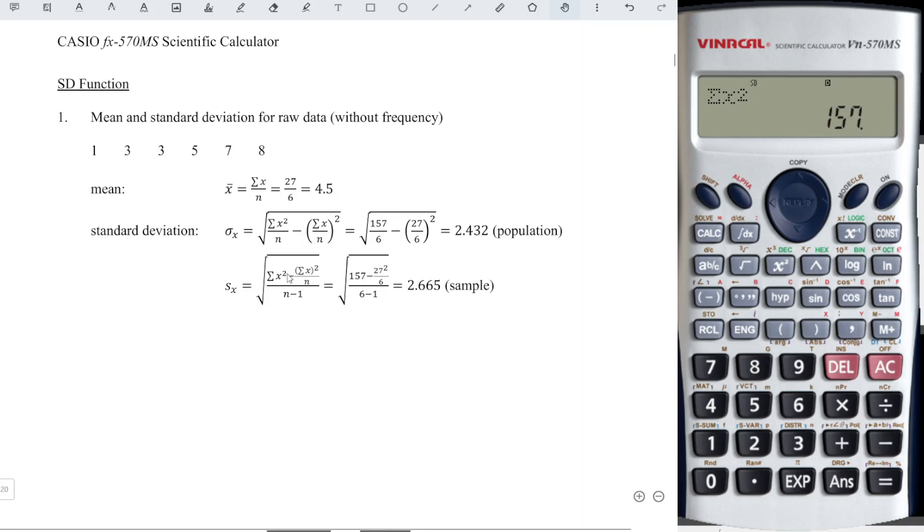We have to bear in mind that summation X squared is totally different from summation X, the whole thing squared. For summation X squared, we can get it from the calculator, 157. And for summation X the whole thing squared, we have to get the value of summation X, which is 27, and we square manually.